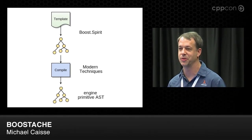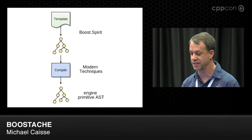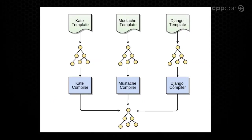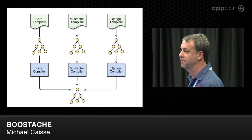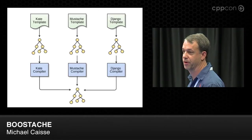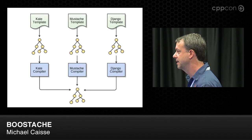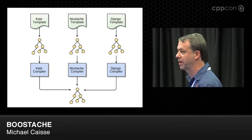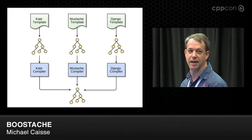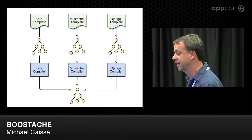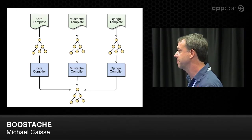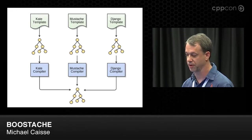You might think, why would you want two ASTs when you already had a perfectly good one? The reason is because Kate wants to write her own template language. So we support the Kate template, Mustache template, and Django template, and you can just keep adding templates. The grammars to write for Spirit are very simple, and the declarative rules describing how to convert one AST into another are also very simple to write. Now we have a common AST that describes the instruction sets for the compiler.